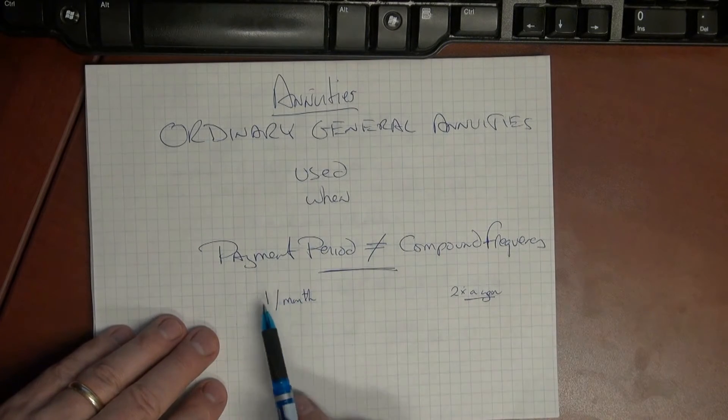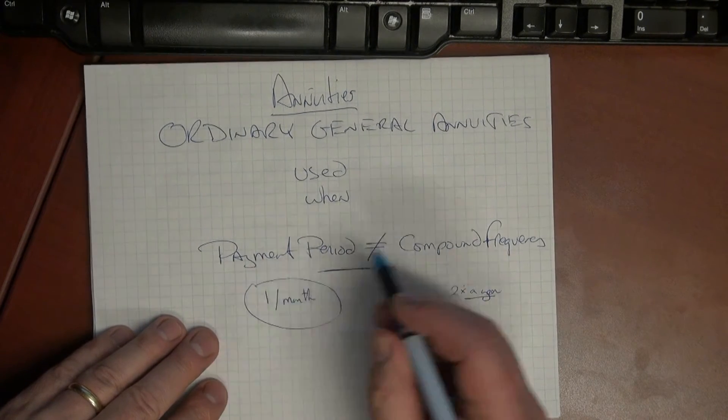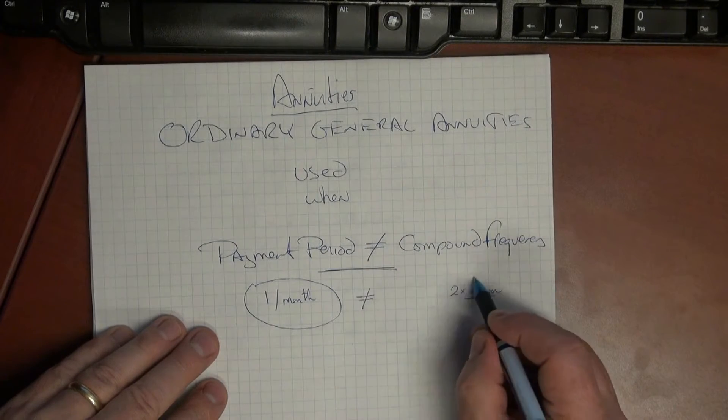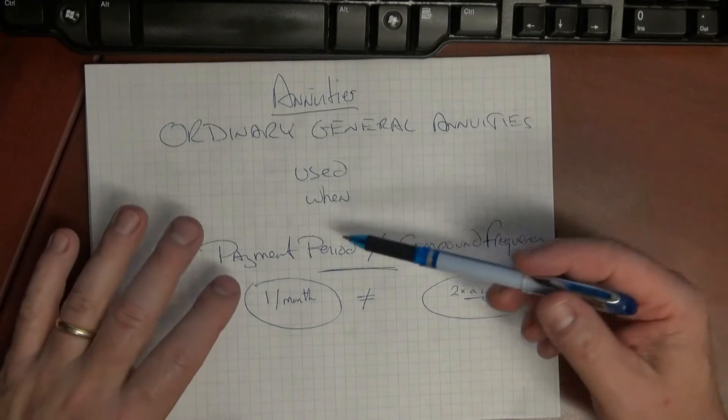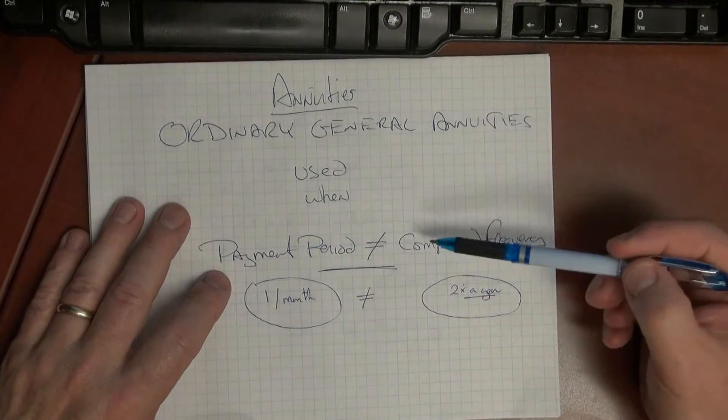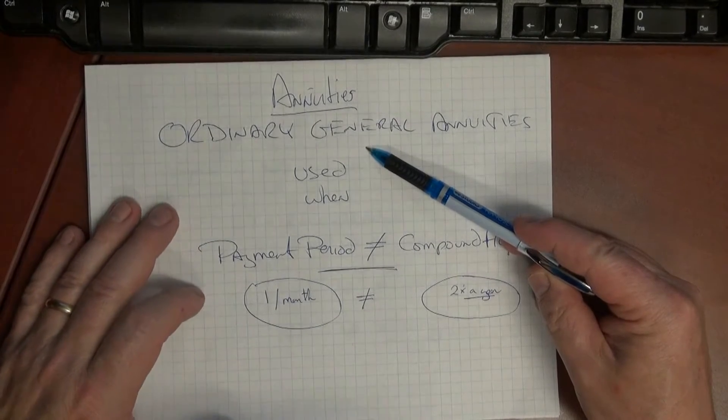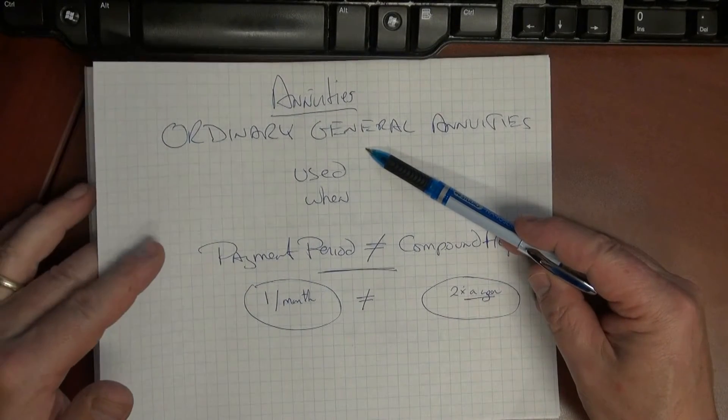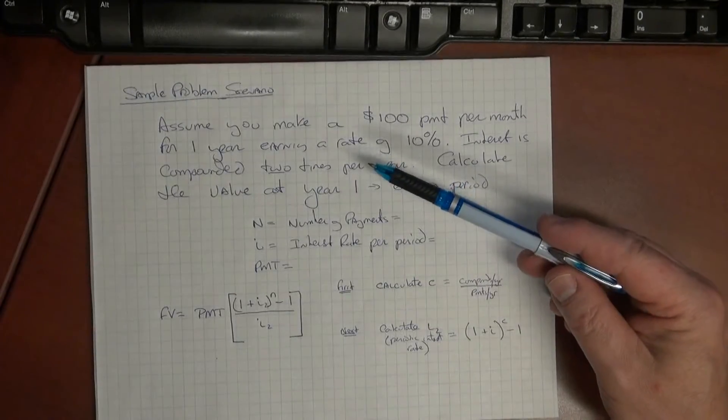This is an example here then in this scenario we have the once a month is not equal to the two times a year. Whenever we get a problem in which these two things are different, we have to use the ordinary general annuity. Now the ordinary general annuity has a slight difference from the simple annuity. We're going to take a look at this by way of an example.